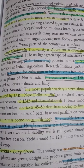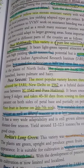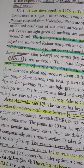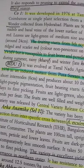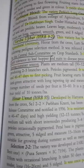Important okra varieties: Pusa Makhmali, Pusa Sawani, Perkin's Long Green, Pusa A-4, MDU 1, CO 1, Arka Anamika, Arka Abhay, Punjab Padmini, Varsha Uphar, and Hisar Unnat — all are important varieties of okra.